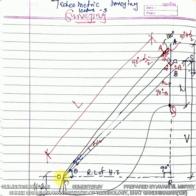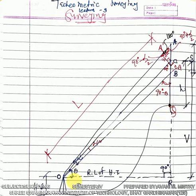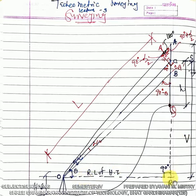First of all, how is the instrument station? The staff station is Q. Here we take the line of collimation as inclined and the angle of elevation is theta. So here you can see the line of sight — this one is called the line of sight. The line of sight is the line of collimation, and the angle here is theta.